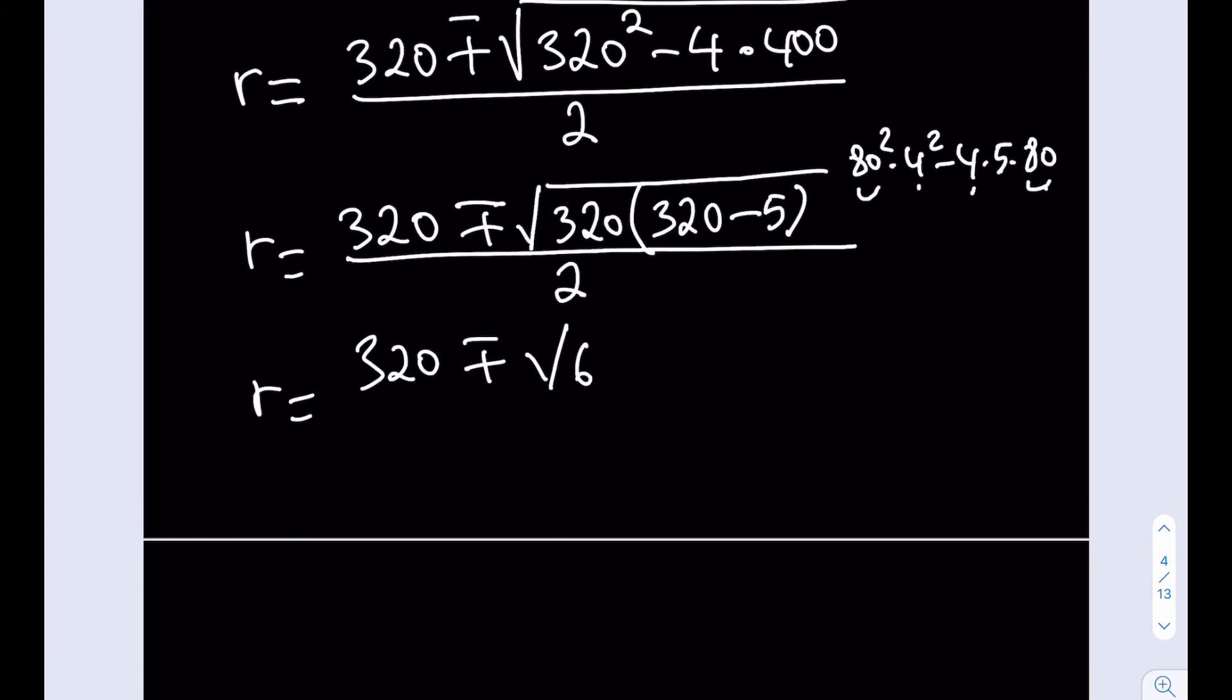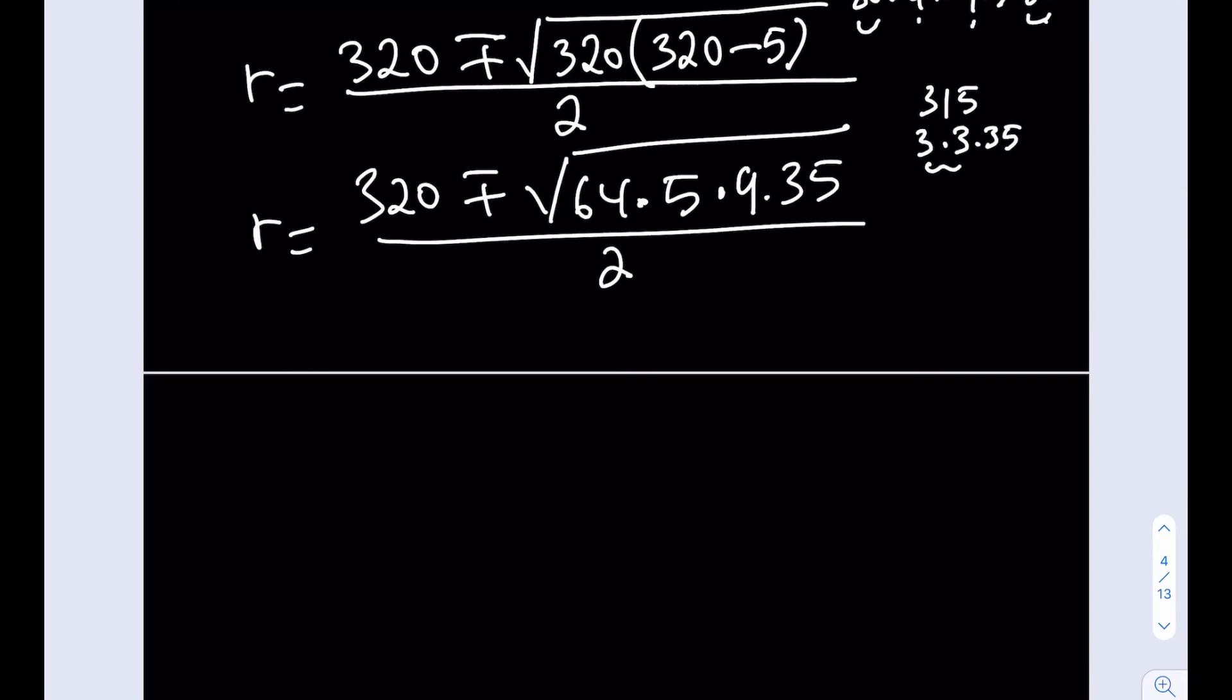64 is a perfect square, so that's perfect. You can take it out as an 8. 9 is a perfect square, that becomes a 3. I have the 5 times 35 inside. So 5 times 35 is 5 times 5 times 7, and that's 25 times 7. So you can also factor out the 25 as a 5, and you're only going to be ending up with 7 inside. Let's go ahead and multiply 8 and 3 and 5 together. 8 times 3 is 24, 24 times 5 is 120. So my expression becomes, after so much trouble, 120 times root 7 divided by 2.